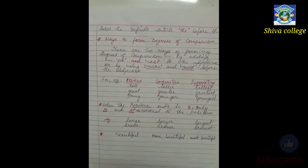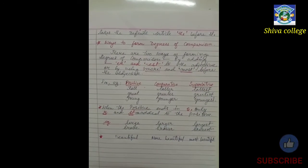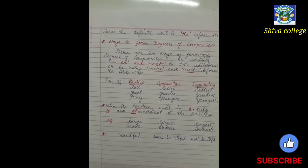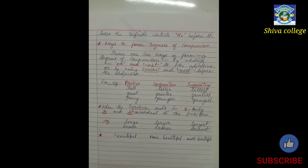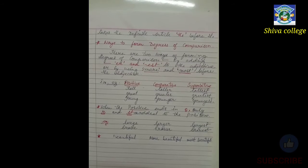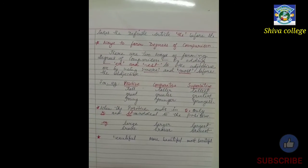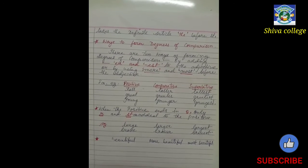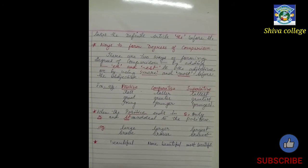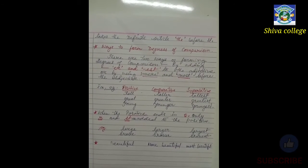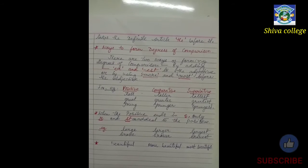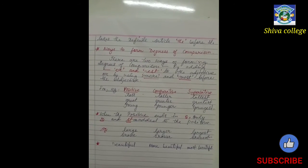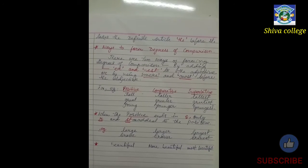Sometimes we use -er and -est, and sometimes we use more and most. For words like tall–taller–tallest, great–greater–greatest, young–younger–youngest, old–older–oldest, we change into comparative and superlative form by adding -er and -est. When the positive form ends in -e, only -r and -st are added.